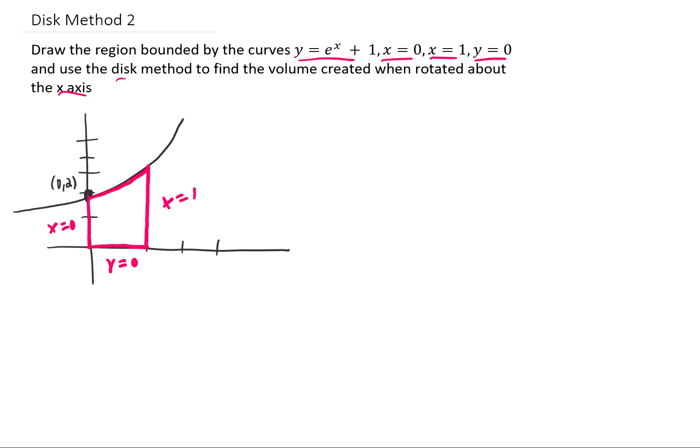So I think that you can see the region that we're looking at here. We're going to slice this region up and rotate it about the x-axis. Each one of those slices, when rotated, is going to give us a disk with a width dx. We're gonna find the volume of each one of those disks and add all those disks up from x equals 0 to x equals 1. So the volume of the entire rotated region is going to be the sum of all of the little volumes of the little disks added together.